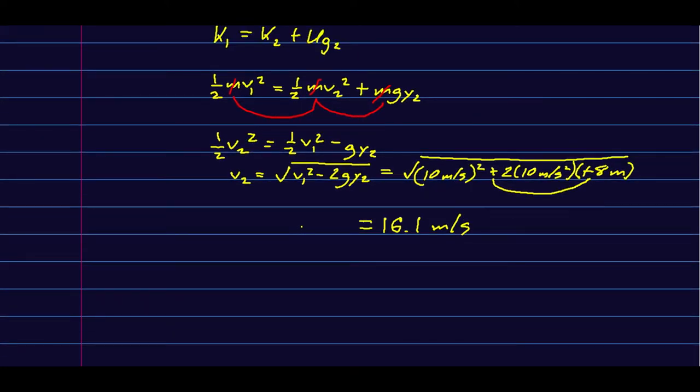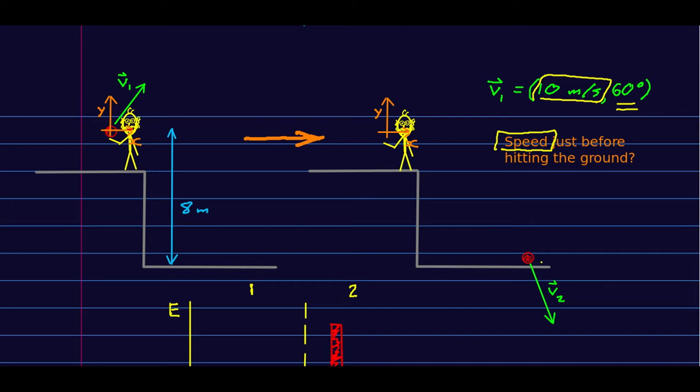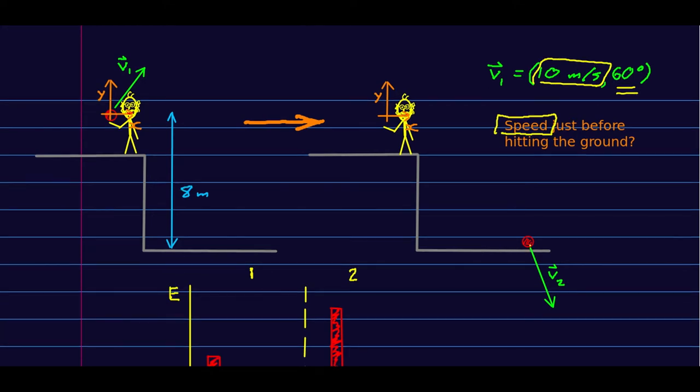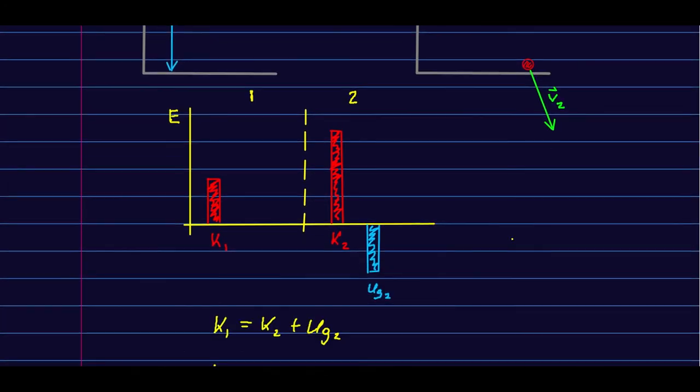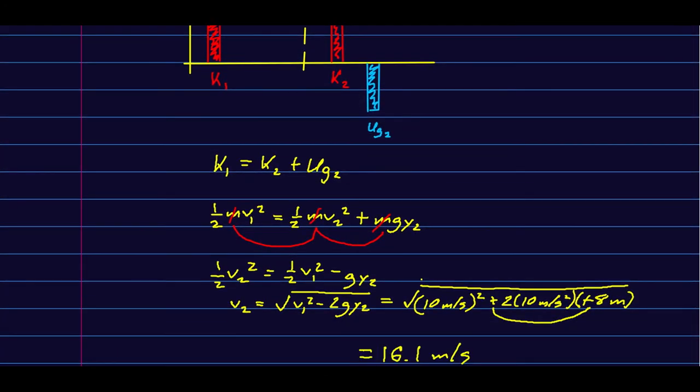Now, on the other hand, if I wanted to know what angle it was going at just before it hit the ground, I'd have some more work to do. And energy wouldn't be very good at that. This is the trade-off. Energy is insensitive to direction. So if you don't care about direction, energy will save you a lot of work. But if you do need to know information about directions, energy is not a good way to get it.